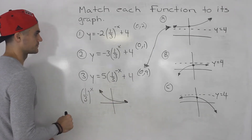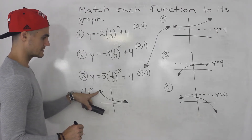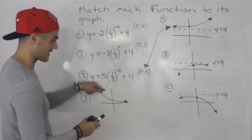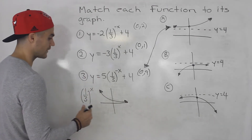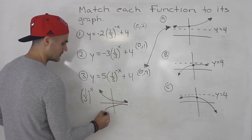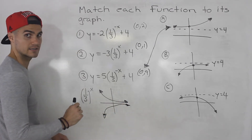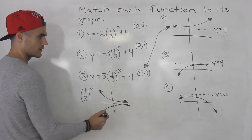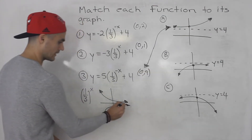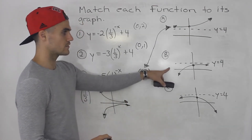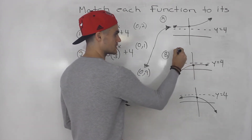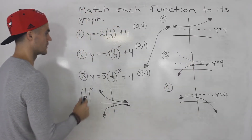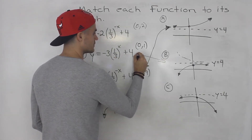This parent function is decreasing. For function 2, the a value is negative 3, which means it gets stretched by a factor of 3, and because the a value is negative, that's also a reflection in the x-axis. The c value of 4 means we shift it up by 4. Out of both remaining graphs, the one that has this shape is graph B. So we took 1/3 to the power of x, reflected it in the x-axis, and shifted it up by 4 — function 2 matches graph B.